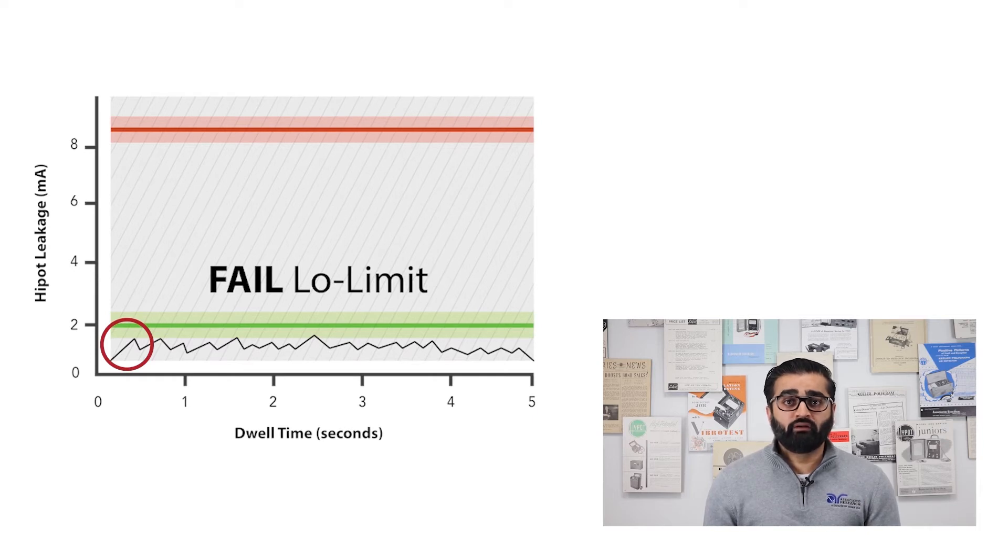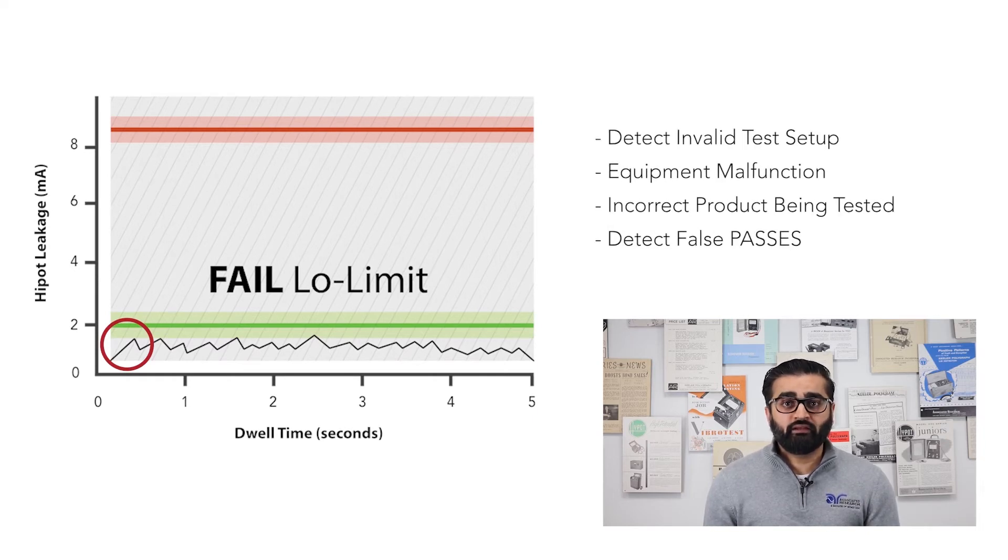Now let's take a look at the low limit parameter. This value doesn't come from any standards, but something that should be considered by all manufacturers. In an event that test cables aren't connected properly or if the test equipment malfunctions, this can result in no current being measured by the test equipment, creating what's known as a false pass condition.